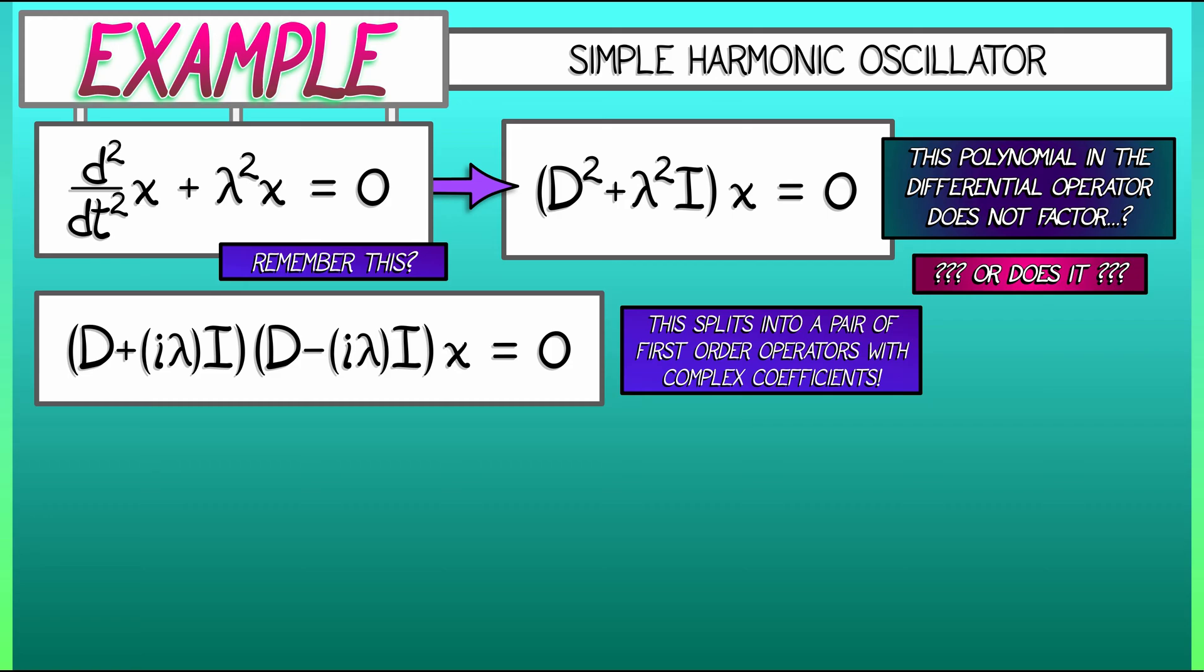Wait, what is this? How does this work? Multiply it out. Do a whole first outside inside last thing. What do we get? We get d squared and then plus i lambda times d and then minus i lambda d. Those cancel out. And then that last term is minus i squared lambda squared. i squared is negative 1. The two minus signs give you a plus sign. That's plus lambda squared times the identity. That's it. That is our operator.